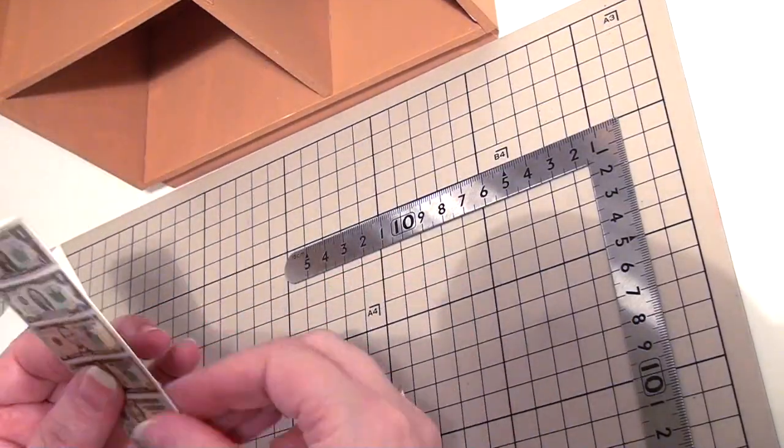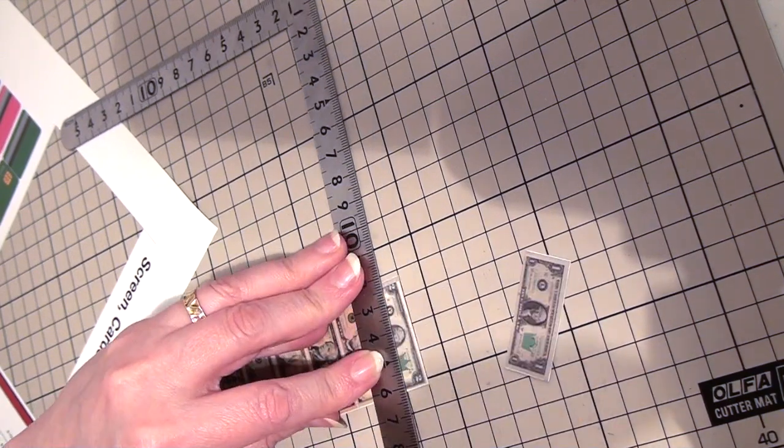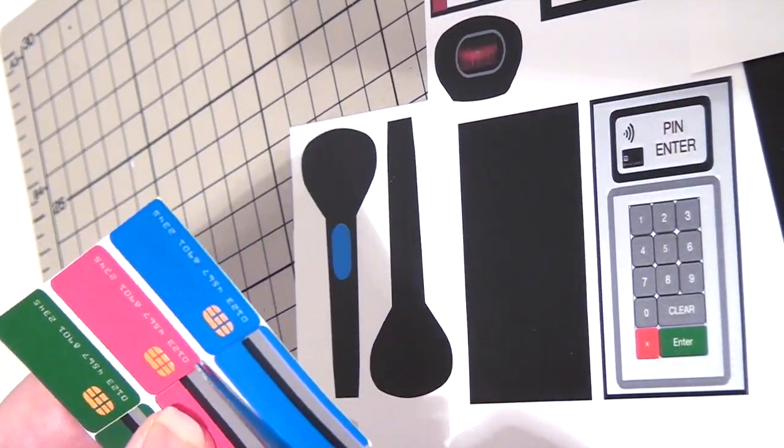At first cut out the money, bend the center, glue it together and cut each one out individually. Do the same with the credit cards.